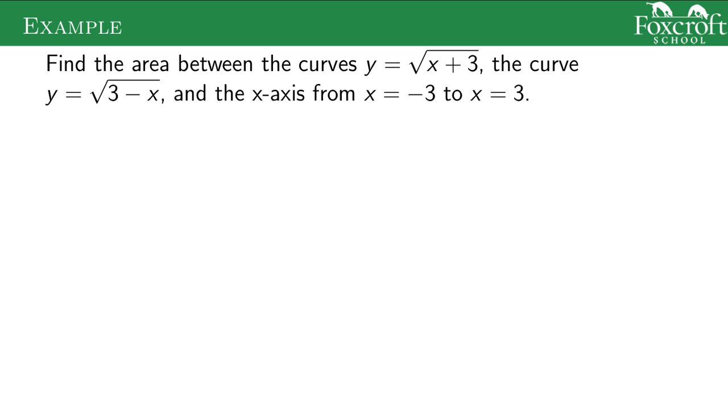Here we want to find the area between the curves and the x-axis. I just graphed it so we can see what we're doing. So square root of x plus 3 is going to be this curve here. Square root of 3 minus x is going to be this curve here. And x equals negative 3 is right here, x equals positive 3 is right there. And the x-axis is there, so we're trying to find this green area.